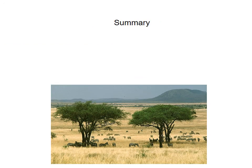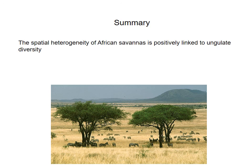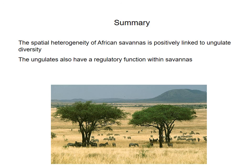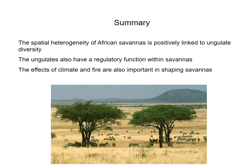To summarize this lecture: first, the patchiness — or in formal terms, the spatial heterogeneity — of savannahs is very positively linked to ungulate diversity; the more patchy a savannah is, the greater the diversity of ungulates. We must also remember that ungulates are able to regulate savannahs through their grazing and browsing habits and can change the structure of the vegetation. But don't forget these other important factors discussed throughout the course — the effects of climate, rainfall, temperature, and fire are also extremely important in shaping the savannahs we see in Africa today.